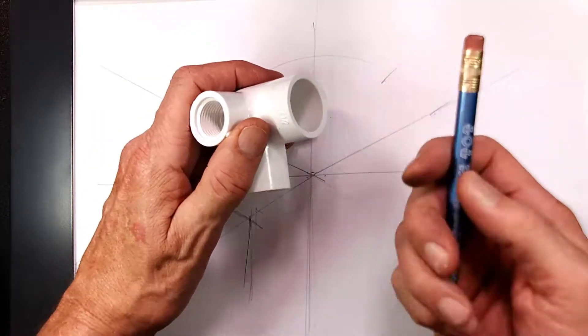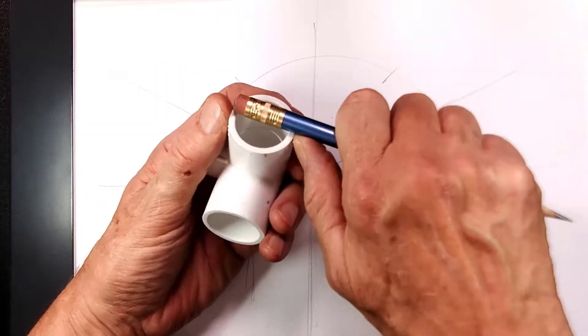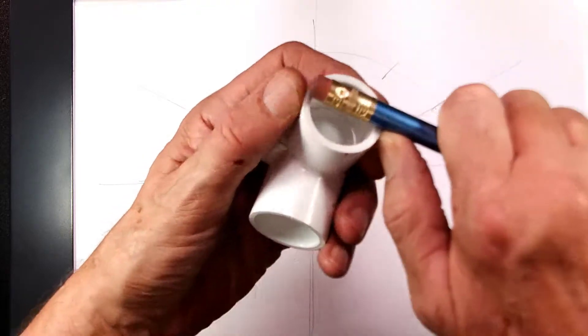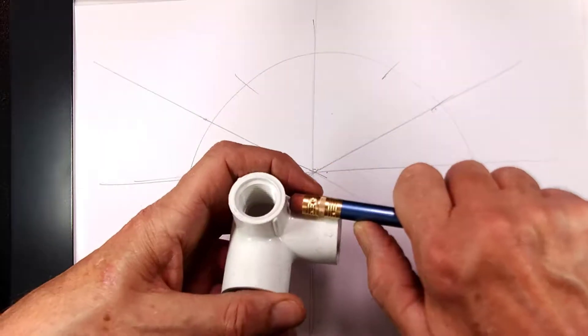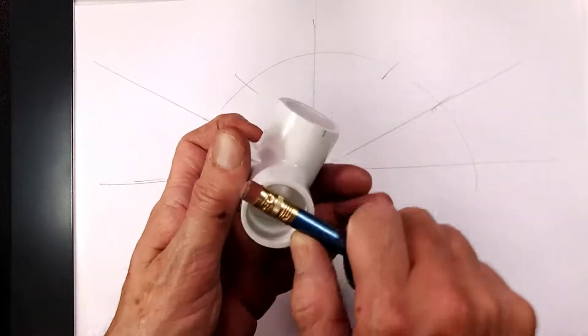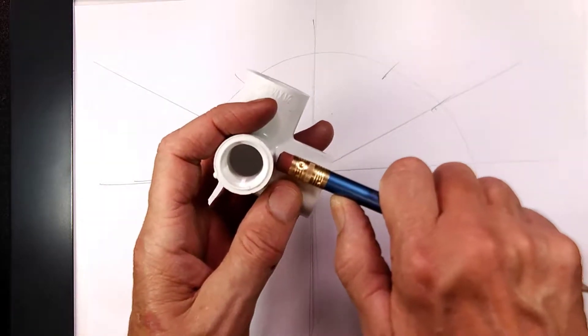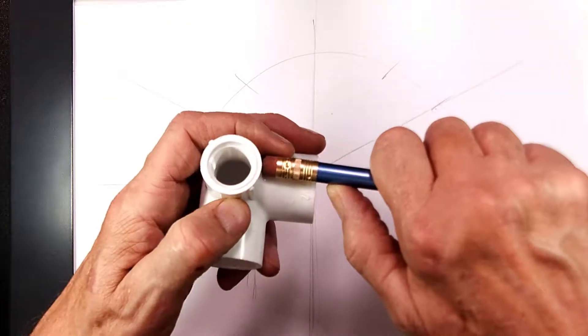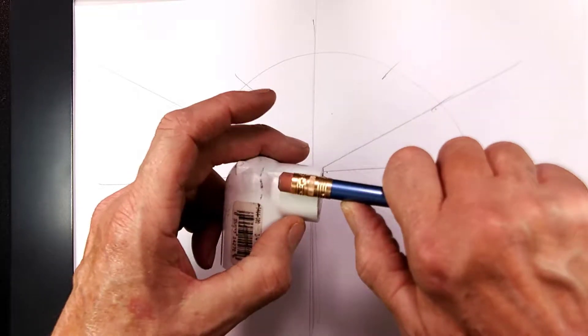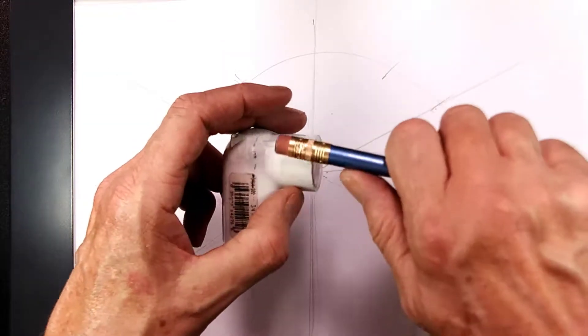First of all we need to get our proportions. Let's use our pencil to measure proportions. Let's say this is one unit, and we're going to approximate this as one unit. It's a little less, maybe three-quarters. And this is a half.